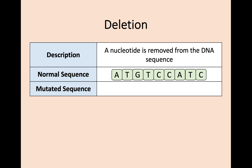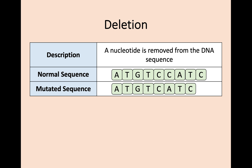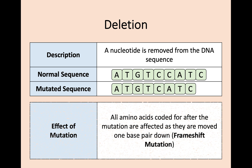Similarly in deletion, the nucleotide is removed from the DNA sequence. We have that original normal sequence, but in the mutated one there's one less — something has been deleted. As you can see, there were two cytosine bases and now there's only one. This really has the same major impact as insertion, because you've now affected every other amino acid coded for after the mutation — everything's been moved one base pair down — and that is still a frame shift mutation.